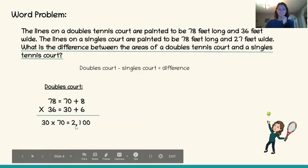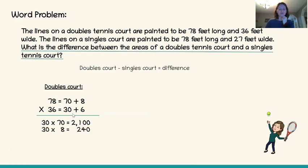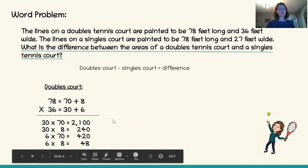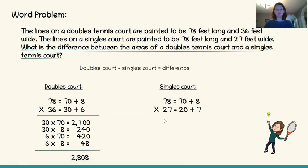30 times 70 is 2,100, because 3 times 7 is 21 and I add the zeros. 30 times 8: 3 times 8 is 24, add the zero — 240. 6 times 70: 6 times 7 is 42, add the zero — 420. 6 times 8 is 48. We've got all the partial products, so we add them together to solve. The doubles court is 2,808 square feet. Now let's figure out the singles court.